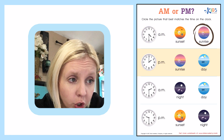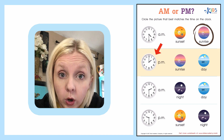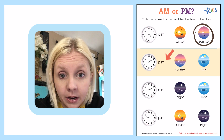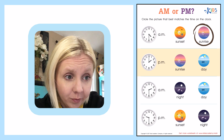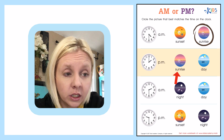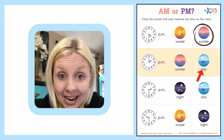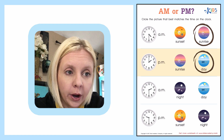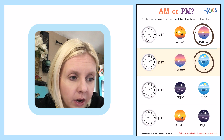The next one: the shorthand is right on the two and the long hand goes straight up to the twelve, so it's 2 o'clock PM, which means it's in the afternoon. Is it the sunrise in the early morning, or is it daytime? It's going to be the day or afternoon, so we're going to circle that one.